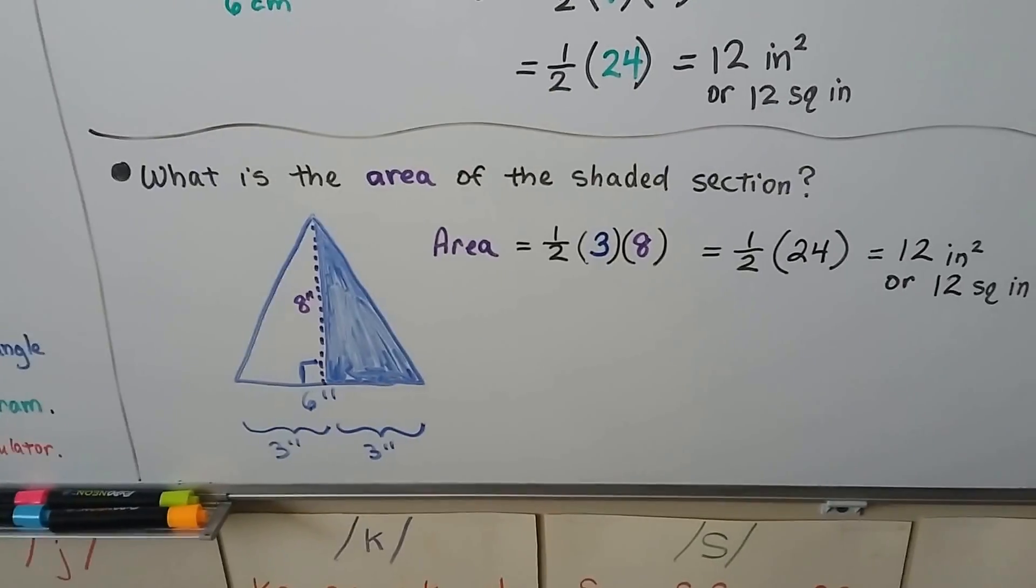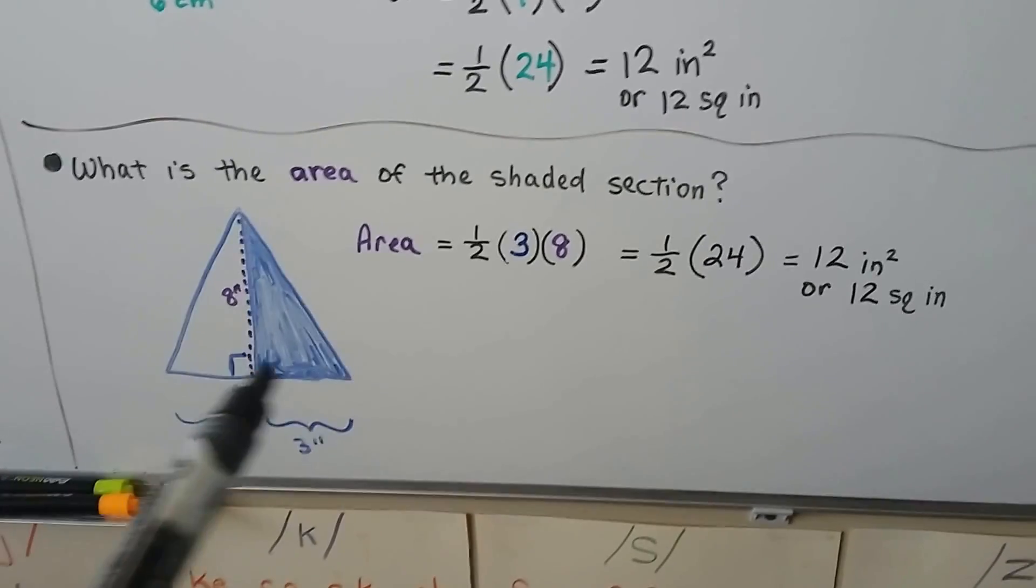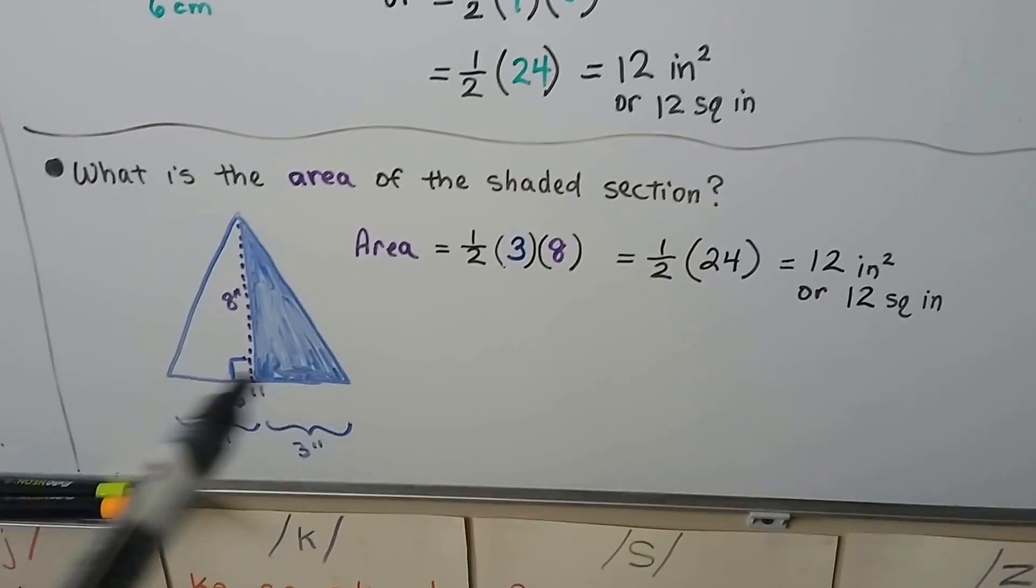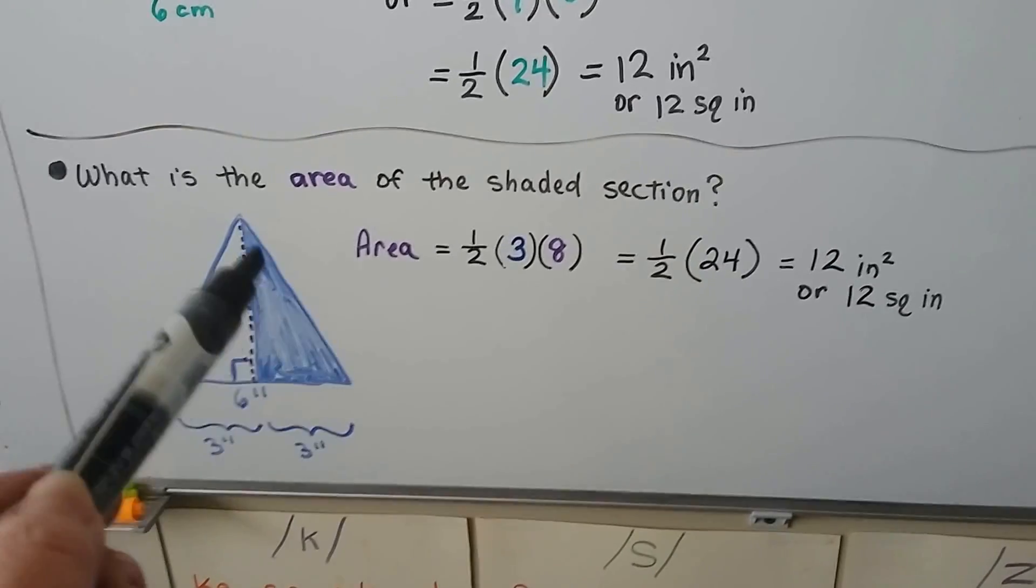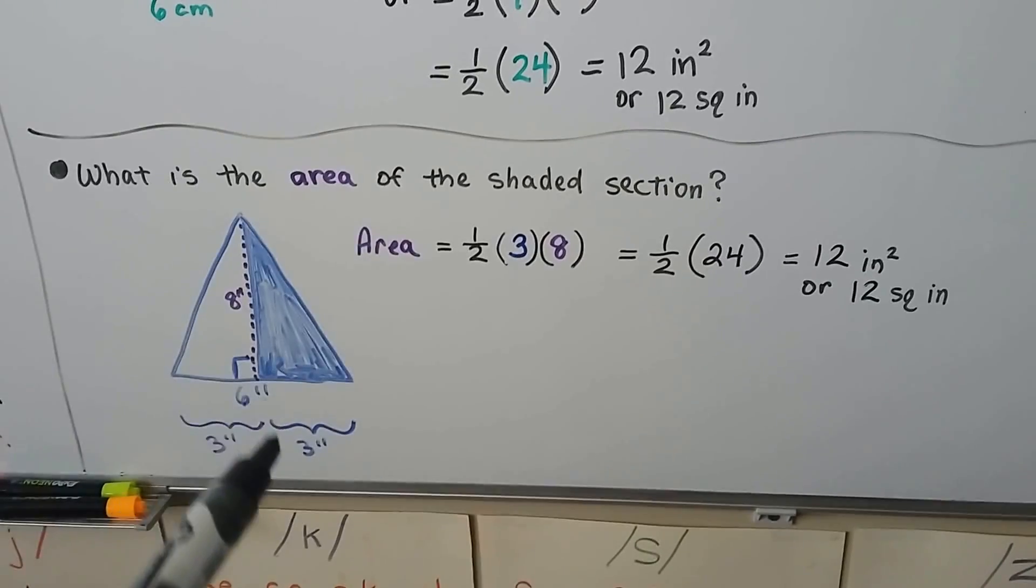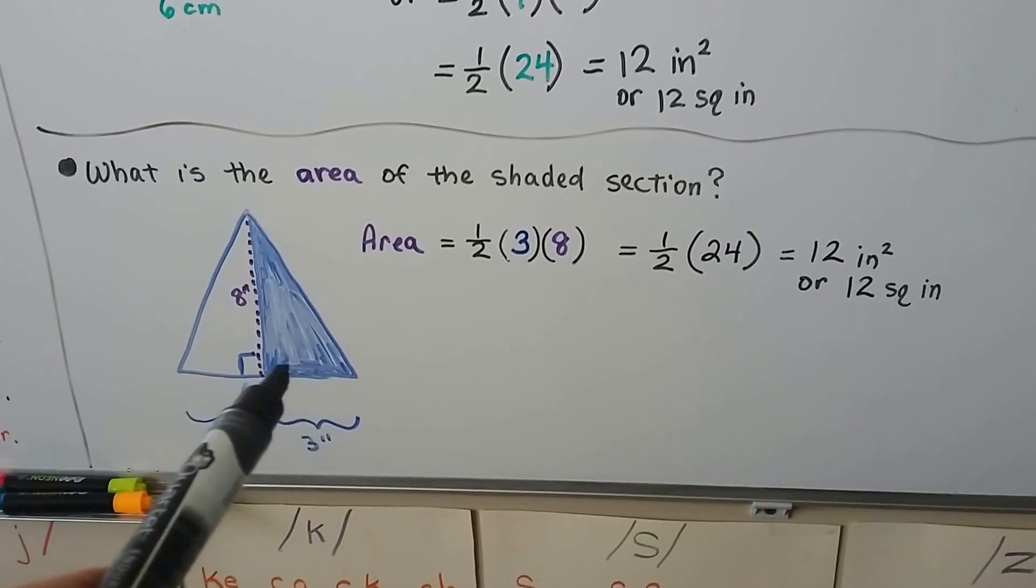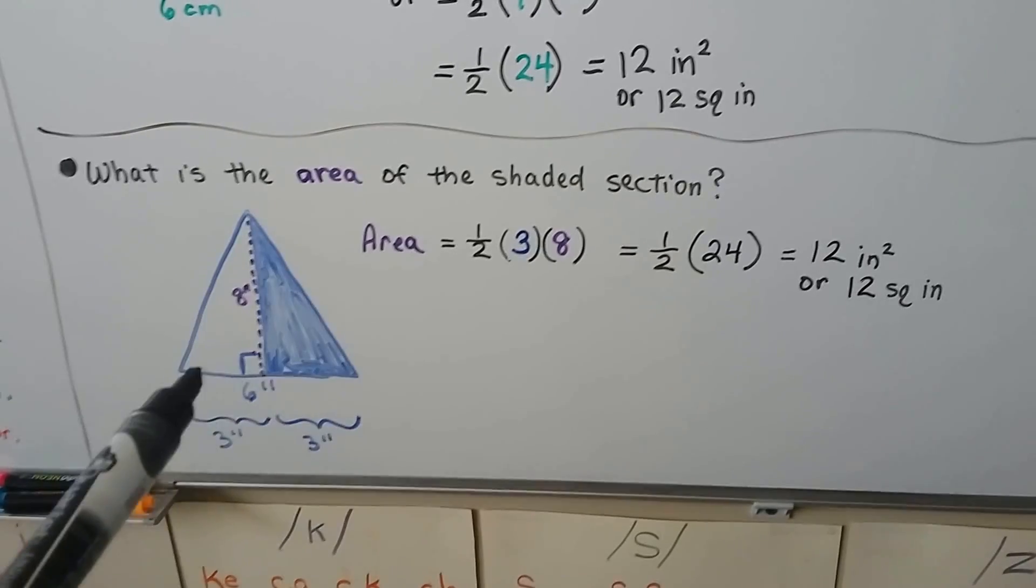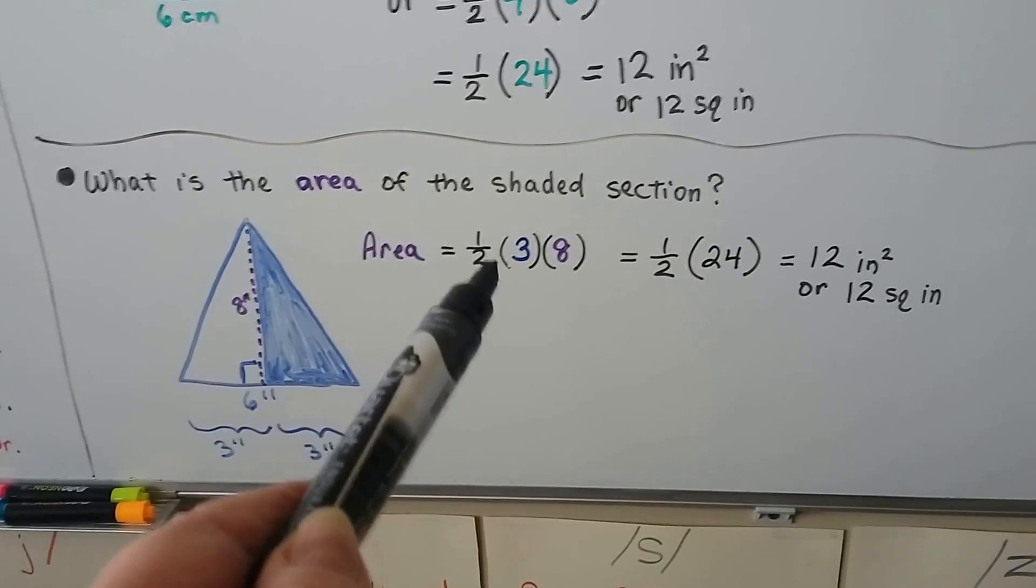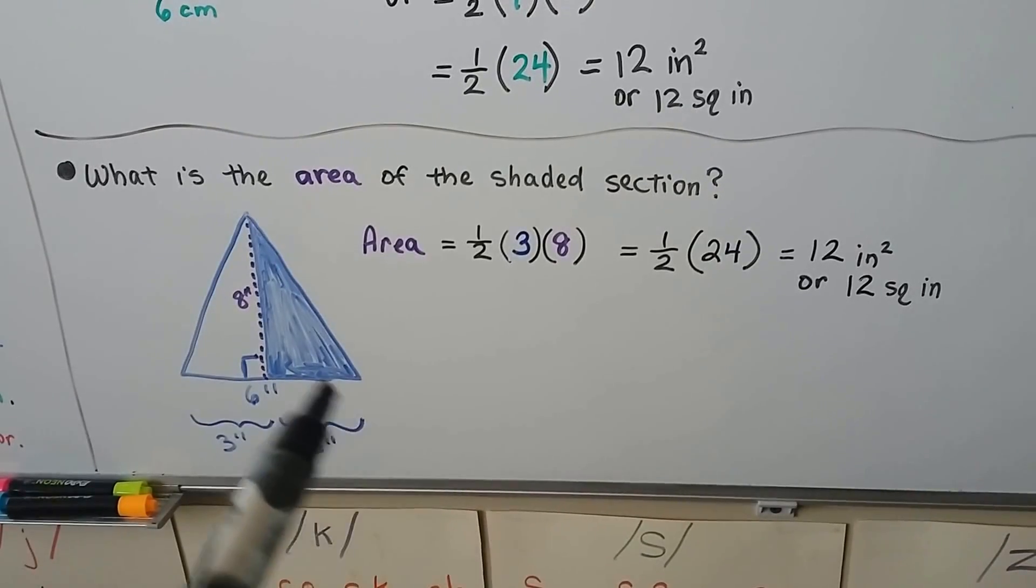What is the area of the shaded section for this one? Now we have half of a triangle. But if you look here, the shaded section says this whole base is 6 inches. So for the shaded section of the triangle, if the whole thing is 6, then the shaded part is 3. So we could do half times 3 times 8. Get half times 24 or 12 inches squared or 12 square inches.